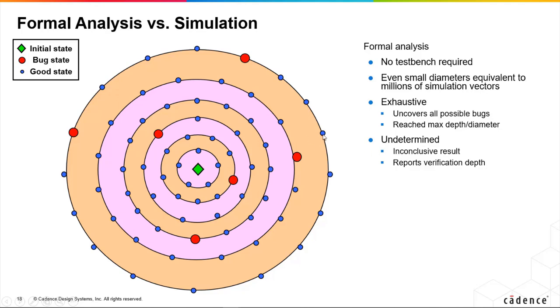And the problem with this of course is at some stage this state space becomes too big to evaluate in any reasonable kind of time, so you might get undetermined results. So these red dots representing the bugs, all of them are going to be found by formal.